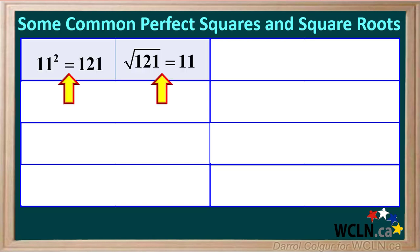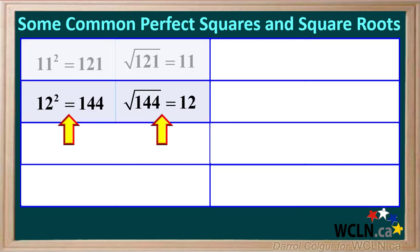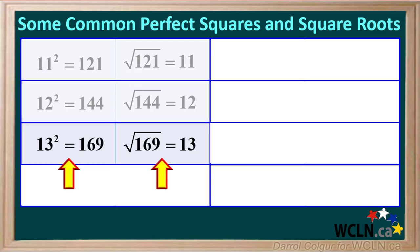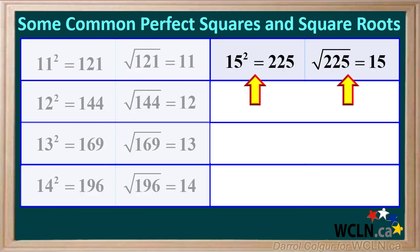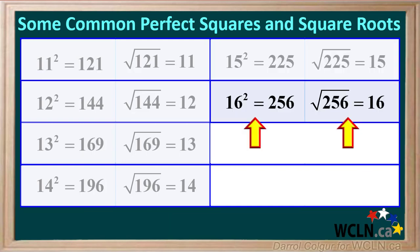11 squared is 121, and the square root of 121 is 11. 12 squared is 144, and the square root of 144 is 12. 13 squared is 169, and the square root of 169 is 13. 14 squared is 196, and the square root of 196 is 14. 15 squared is 225, and the square root of 225 is 15. 16 squared is 256, and the square root of 256 is 16.